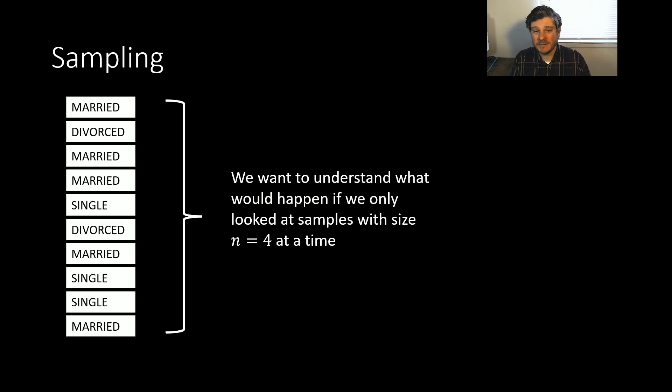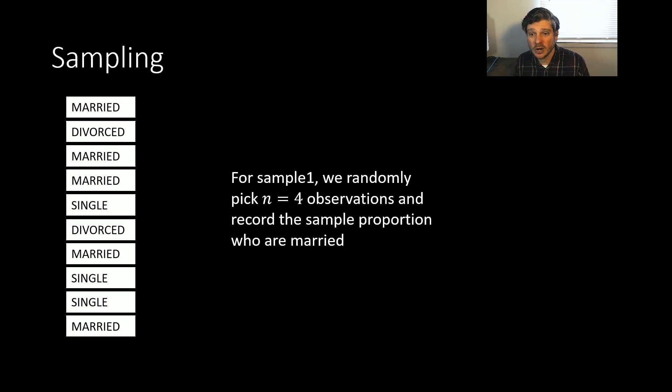What would happen if I had a group of just four of them at a time? So instead of my whole population of 10, what happens if there's only four at a time? So maybe the next four people that get added to this data set, can I predict what that's going to look like? Or just if I had just a random grouping of these four, what is that going to look like too? So we're going to do sample one, which means I'm going to randomly pick N equals four, little n for our sample size. So I'm going to randomly pick four observations, and then just record that sample proportion who are married.